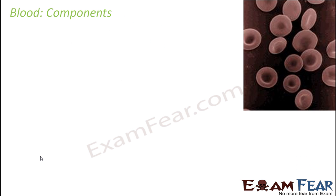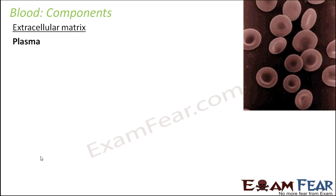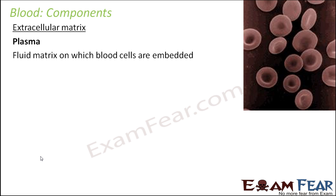Blood has many different components. As in any connective tissue, there is an extracellular matrix. Even in the case of blood, there is an extracellular matrix, and it is known as plasma or blood plasma. This is the fluid matrix in which blood cells are embedded — the normal characteristic of connective tissue is that there is a matrix in which the cells are embedded. In blood, the matrix is fluid in nature, and that is why blood is fluid.